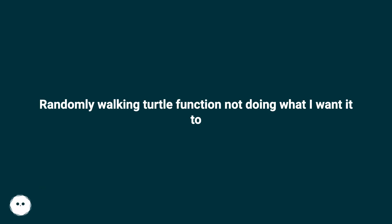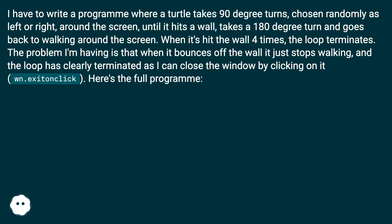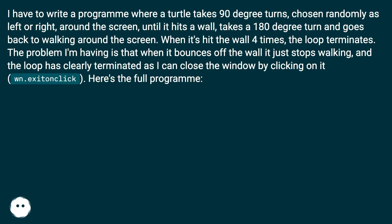Randomly walking turtle function not doing what I want it to. I have to write a program where a turtle takes 90 degree turns, chosen randomly as left or right, around the screen, until it hits a wall, takes a 180 degree turn and goes back to walking around the screen. When it's hit the wall 4 times, the loop terminates.